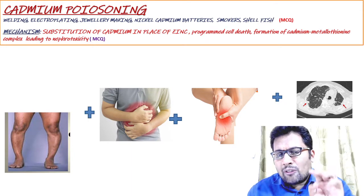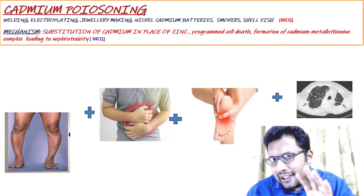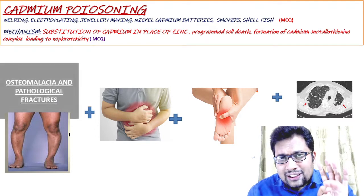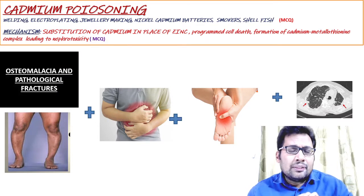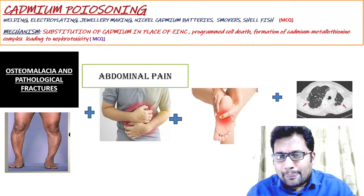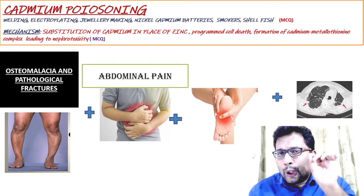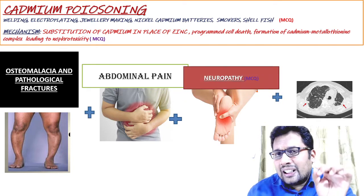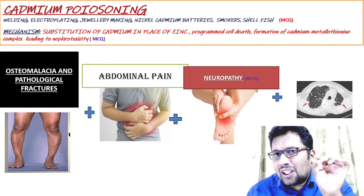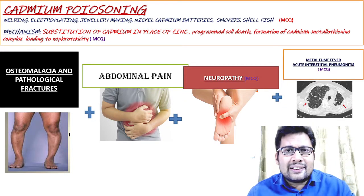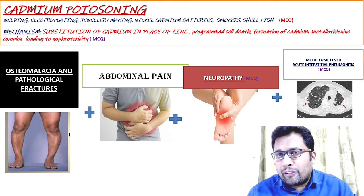There are 4 important clinical features: osteomalacia, abdominal pain, neuropathy, and acute interstitial nephritis. Metal fume fever is also seen.